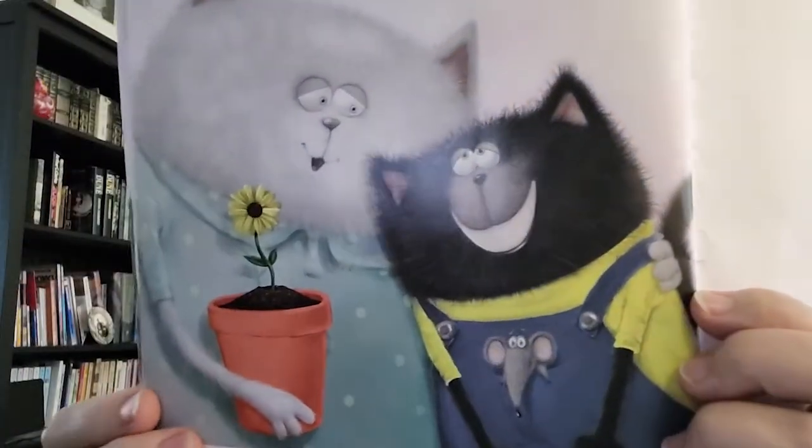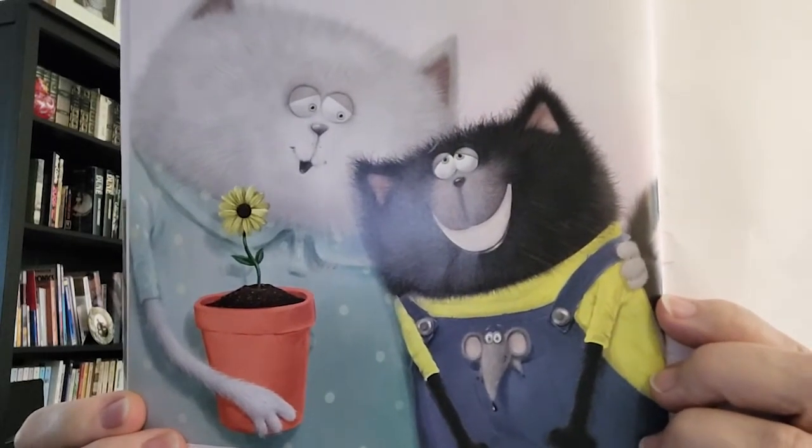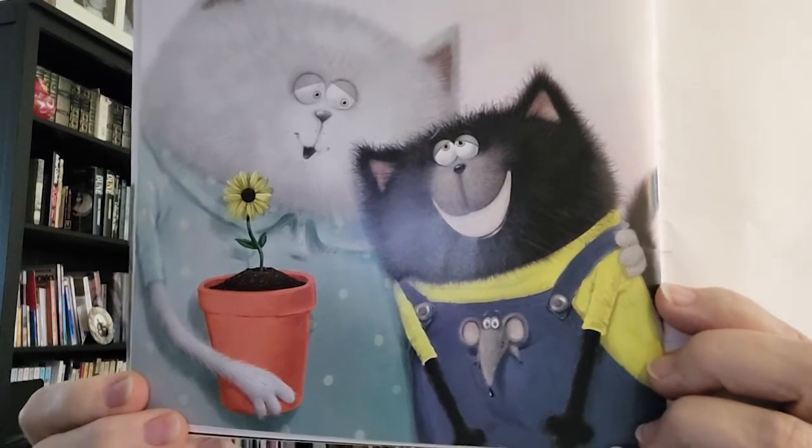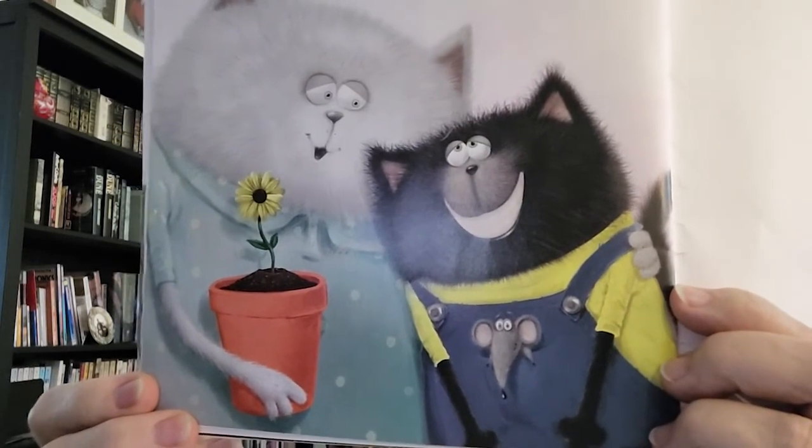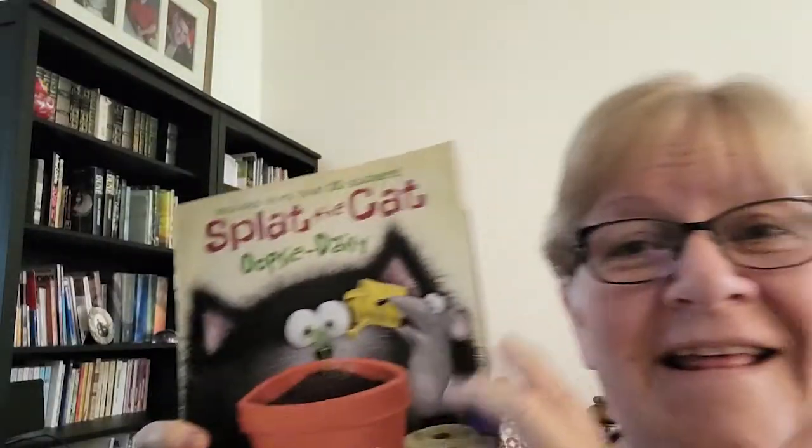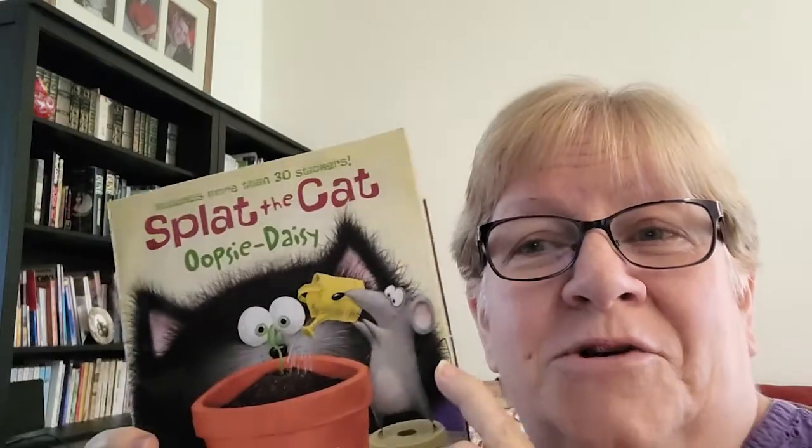I love it, said Mom. It's the most special flower ever. Splat smiled as he hugged his mother. I grew it myself, Splat said, with a little help from Seymour. The end. I hope you enjoyed the story.